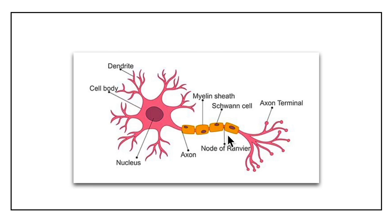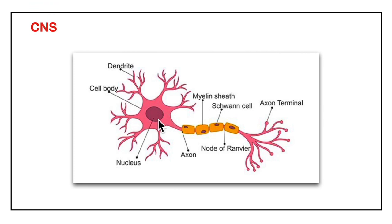We all know the structure of the neuron: here is the cell body, the nucleus, the axon, myelin sheath and the axon terminal. Now if we look at the cell body, a collection of cell bodies is termed the grey matter. The collection of cell bodies in the central nervous system is known as the nuclei, and in the peripheral nervous system it is termed as the ganglia.